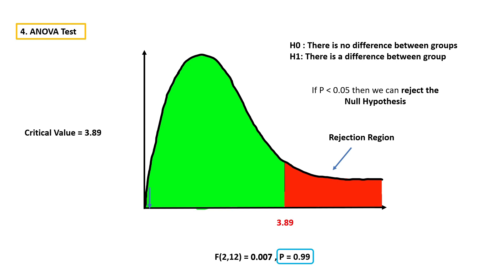Usually people make decisions based on the probability value only. If the probability value is lesser than 0.05, then we can reject the null hypothesis. If the probability value is greater than 0.05, we can't reject the null hypothesis. In this case, the probability value is 0.99, which is very far away from 0.05 — that's why we can't reject the null hypothesis. That's all about ANOVA. In the next video, we are gonna discuss about Chi-square. If you are interested in learning Chi-square, make sure you watch my next video.